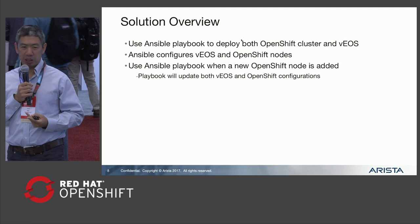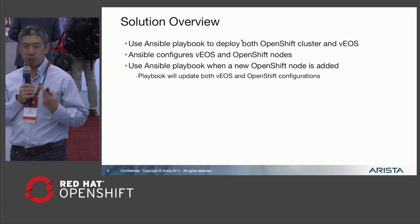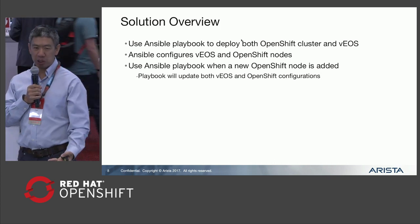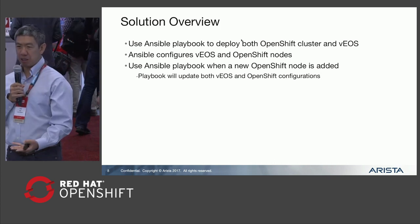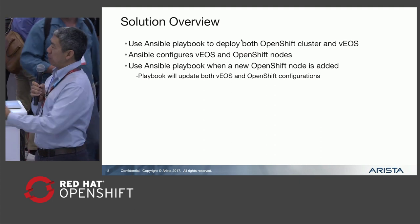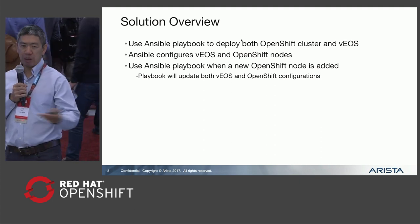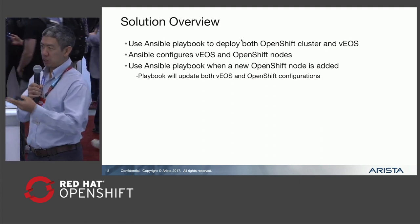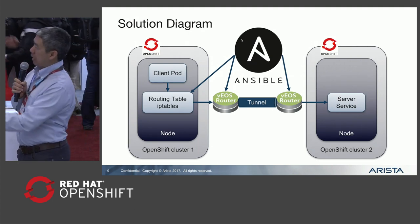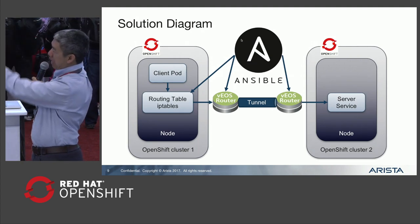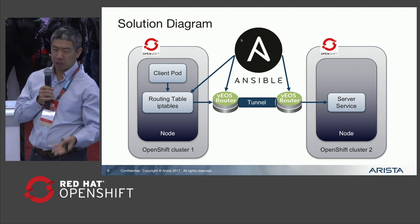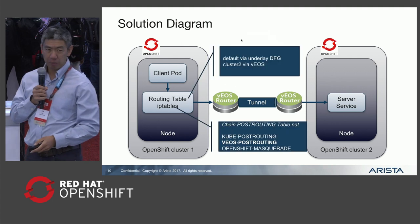There are two different playbooks that will be instantiated. The first one is when you're standing up a new cluster — we run a specific playbook that will stand up OpenShift and stand up vEOS. Then when you add a new cluster, there's a different playbook that takes care of all the configuration to inter-stitch the two different clusters together. Ansible sits in the middle, orchestrating things both on the OpenShift cluster host and on the vEOS router.